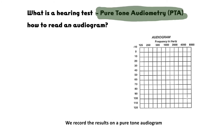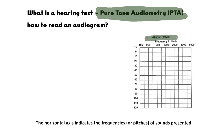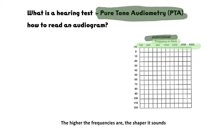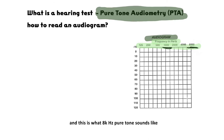We record the results on the pure-tone audiogram. The horizontal axis indicates the frequencies of sounds presented — the higher the frequencies are, the sharper it sounds. For example, this is what a 1000 Hz pure-tone sounds like, and this is what an 8000 Hz pure-tone sounds like.